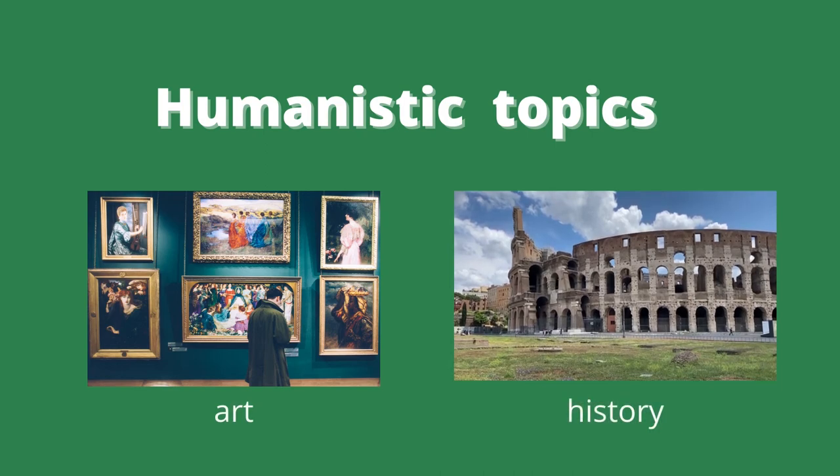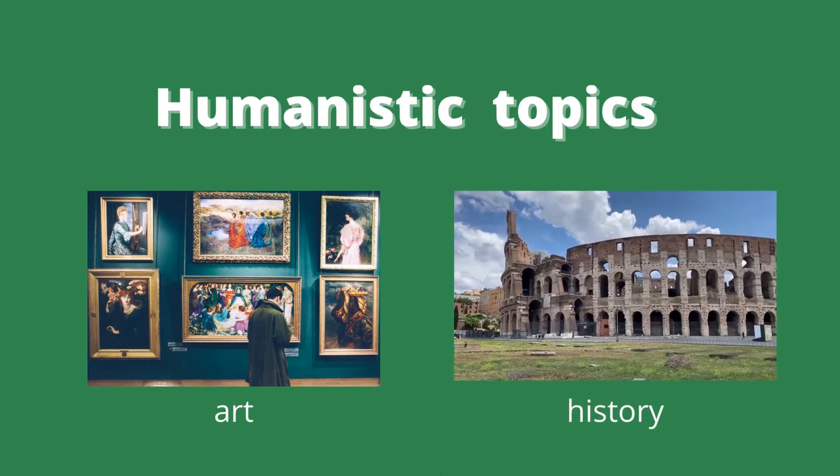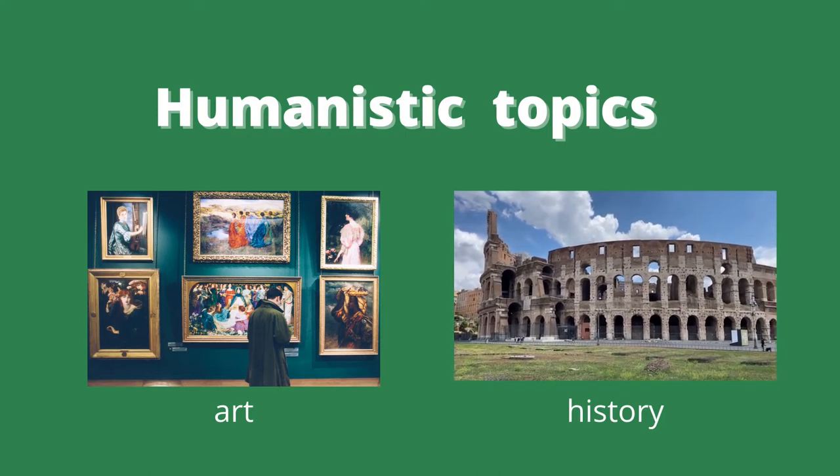Topics in humanistic areas like art or history take more time to develop, so accurate sources can be 10 or 15 years old, if not older.